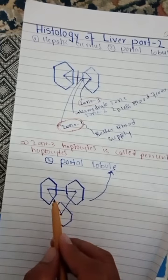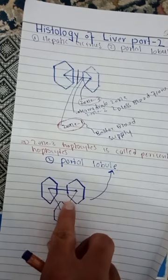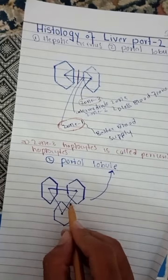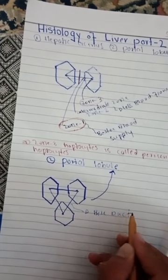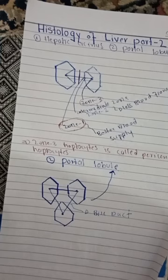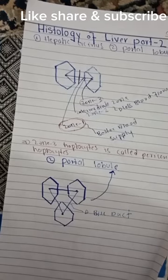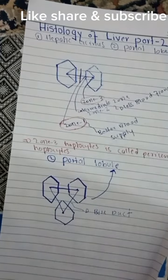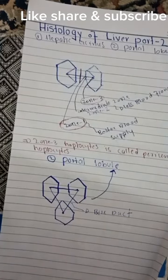The portal tract in the portal lobule is located at the center, between these three classic lobules. Bile travels from the center to the periphery, and finally is released into the bile canaliculi. When we discuss exocrine secretion, specifically bile secretion, we will focus on the portal lobule. When we discuss endocrine secretion, we use a different framework.